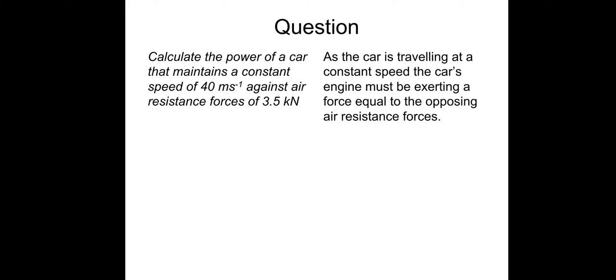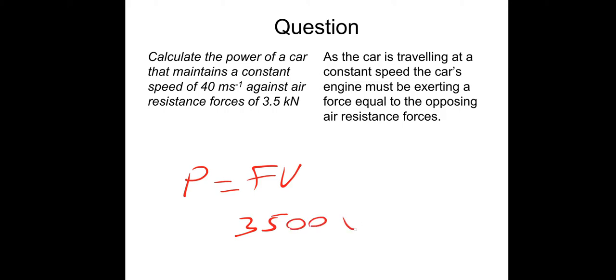Question: calculate the power of a car that maintains a constant speed of 40 meters per second against air resistance forces of 3.5 kilonewtons. Since the car travels at constant speed, the engine force equals the opposing air resistance — resultant force is zero by Newton's second law, so no acceleration. Using P = FV: 3,500 newtons multiplied by 40 meters per second gives 140 kilowatts.